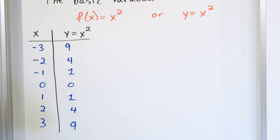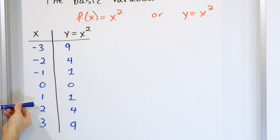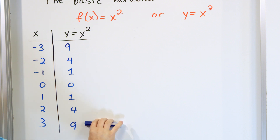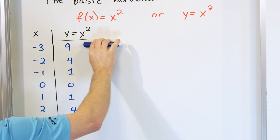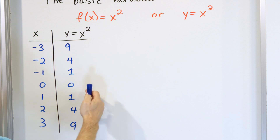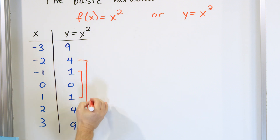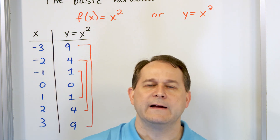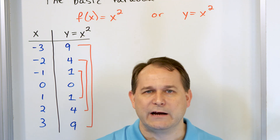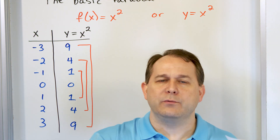Right away, before we even graph anything, you can already see some symmetry in the shape of the parabola. The center of the thing is basically here at zero. If we go to positive values of x we get larger and larger outputs — the y values. But if we go to negative values of x, we get the exact same outputs as on the other side. The one matches with the one, the four with the four, the nine with the nine.